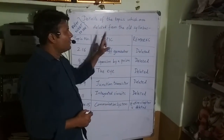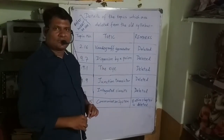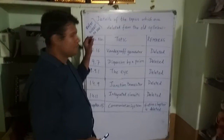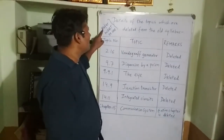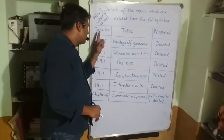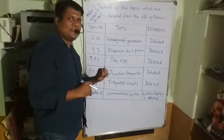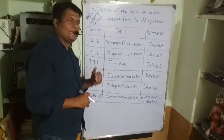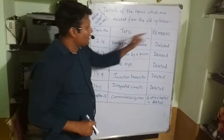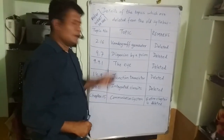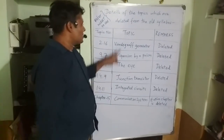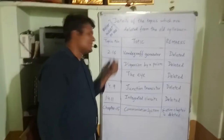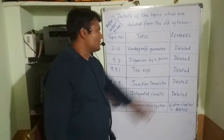Now let me give details of the topics deleted from the old syllabus. I have made three columns: topic number with reference points, topic name, and remarks. The first deleted concept is the Van de Graaff Generator, topic 2.16, which was part of the second chapter, Electric Potential and Capacitance. That concept has been removed.